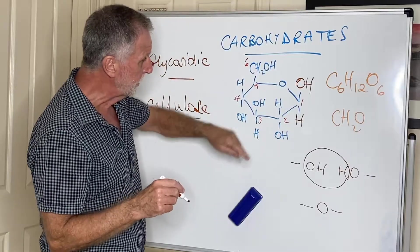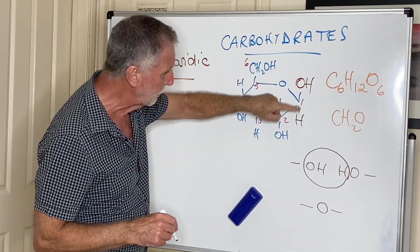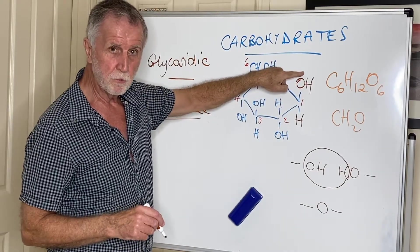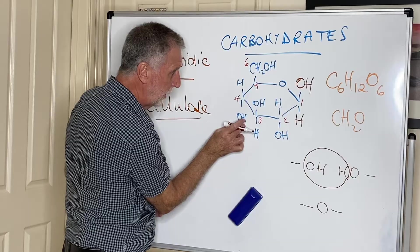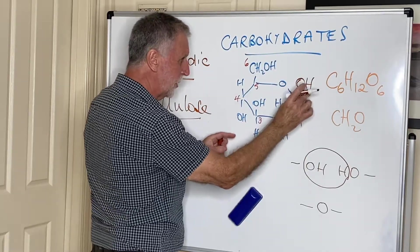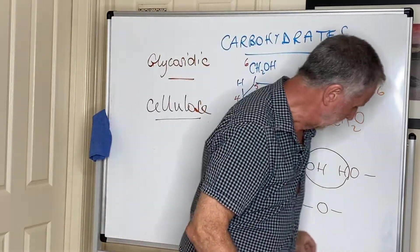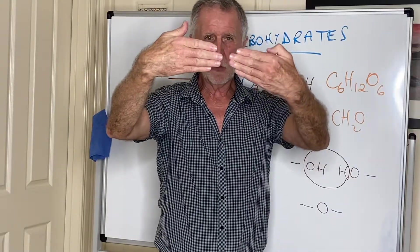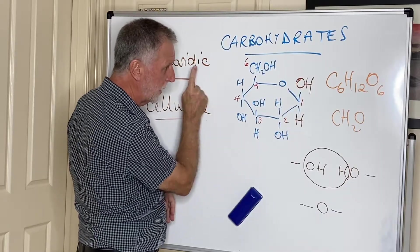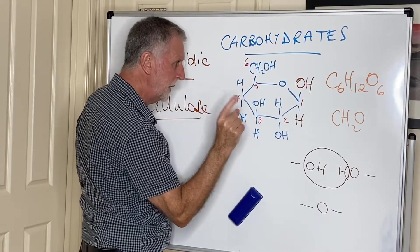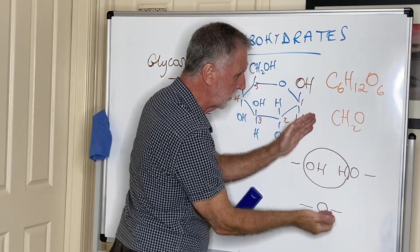So alpha and beta glucose differ simply by carbon one having the OH pointing down for the alpha and up for the beta. Now when this links to that on a neighbor, they are basically not going to be able to get at each other because one's pointing one way, one's pointing down. So what has to happen is if one glucose molecule is like that, the next one will have to flip upside down in order for this and this to form the glycosidic link. What that means is if this glucose has the CH2 pointing up, the next glucose will have it pointing down, the next one will be pointing up again, then down, then up, then down.